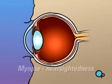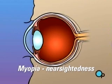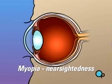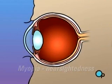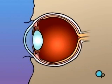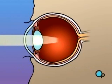Myopia, or nearsightedness, occurs when the shape of the eye is too long or the curve of the cornea is too extreme. In this case, light rays are focused on a point in front of the retina, instead of on the retina itself.